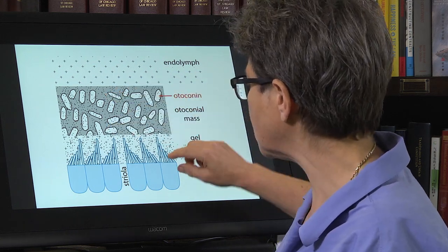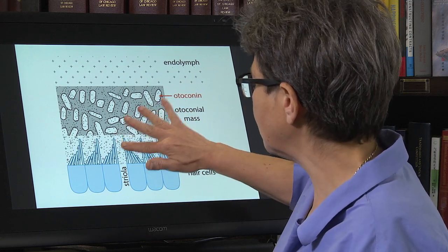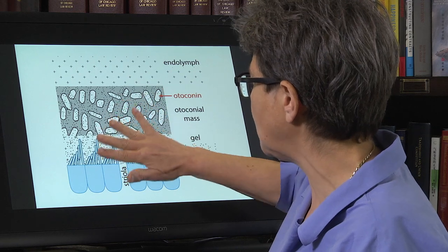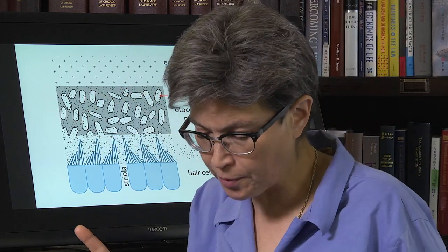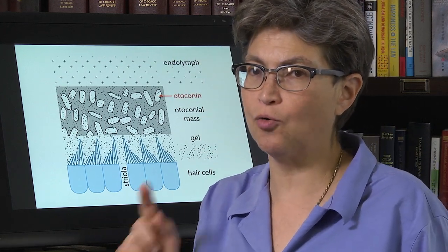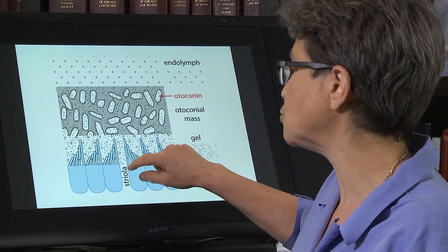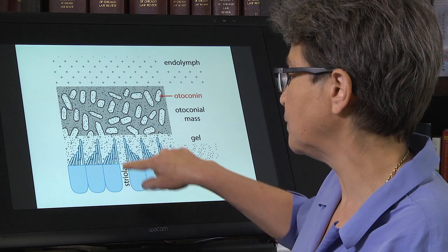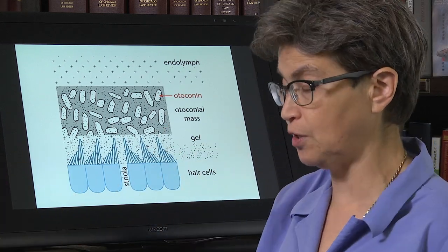And the hair cells are attached to this otoconial mass by this gel. The bundles are in this gel, which is attached to the otoconial mass. The second big difference is that the hair cells are not oriented all in the same direction. They are oriented either towards or away from the striola. This is the striola. It's just a stripe down the middle of the organ.